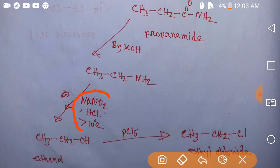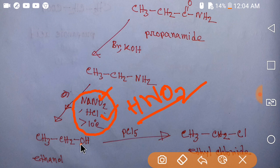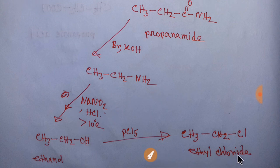Ethylamine reacts with sodium nitrite and HCl, forming nitrous acid (HNO2), which converts the amine group to an OH group, giving ethanol. If you then add phosphorus pentachloride (PCl5) to ethanol, you will get ethyl chloride, which is our target compound. Thank you for viewing this video!